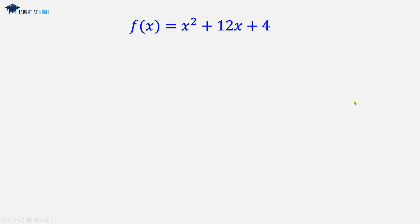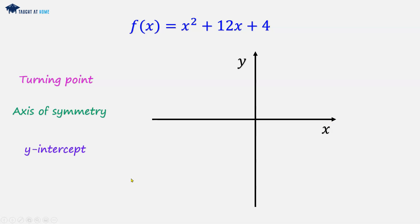So first of all, we need our set of axes, x and y-axis. We need turning point, axis of symmetry, and the y-intercept.